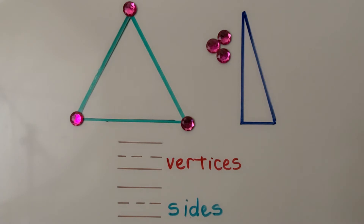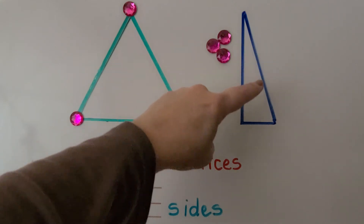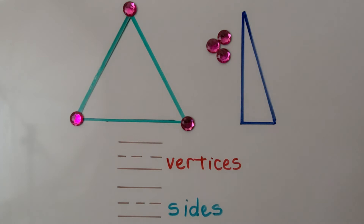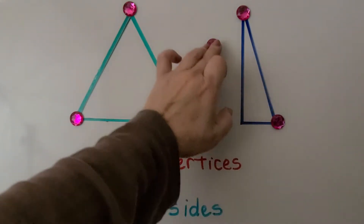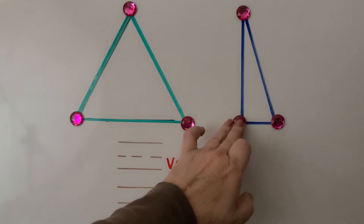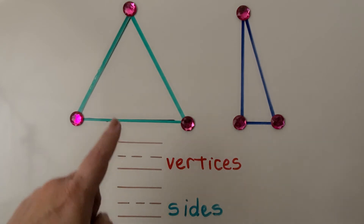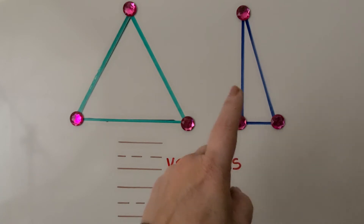We can trace the blue triangle with our finger. We can start at the top, come down, come across, and back up again. And we can put a counter on each of its vertices — one up here, one over here, one over here. It's where two lines meet. We can see both triangles have three straight sides and three vertices. But the green triangle has sides of equal length, and the blue triangle has sides of different lengths.